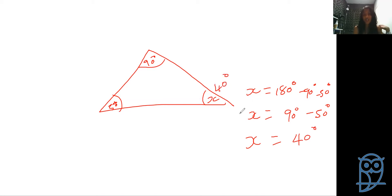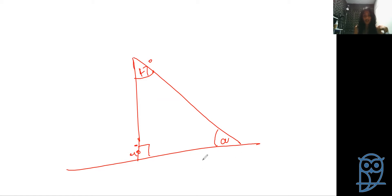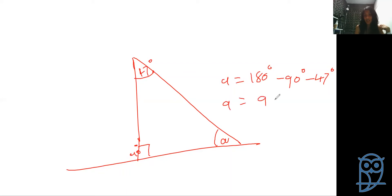We solved that because we know interior angles add up to 180 degrees. Another example: if a triangle has angles of 90 degrees and 47 degrees, solve for a. a equals 180 degrees minus 90 degrees minus 47 degrees. 180 minus 90 is 90, minus 47 gives us a equal to 43 degrees.